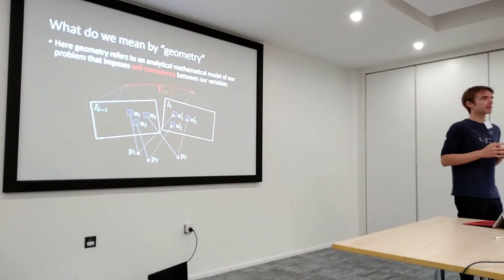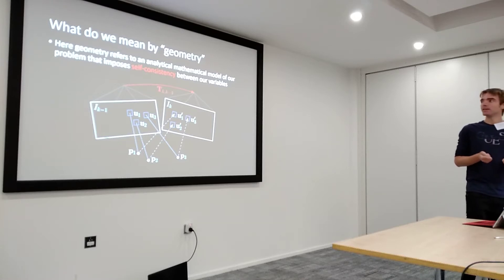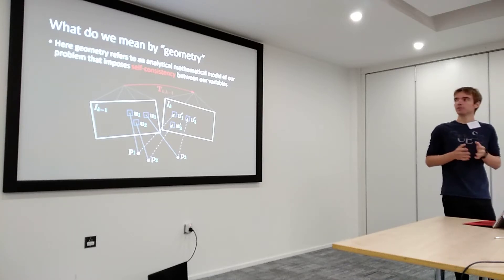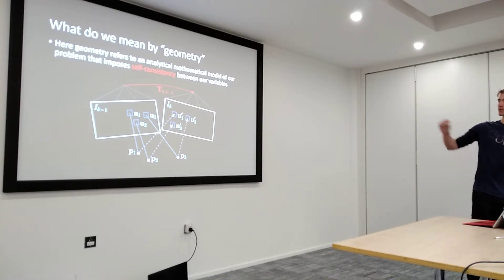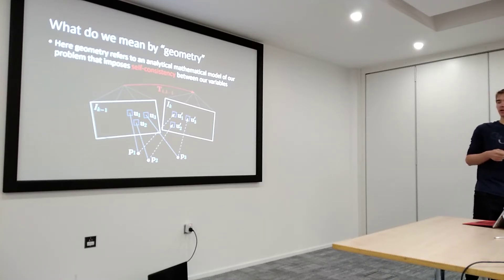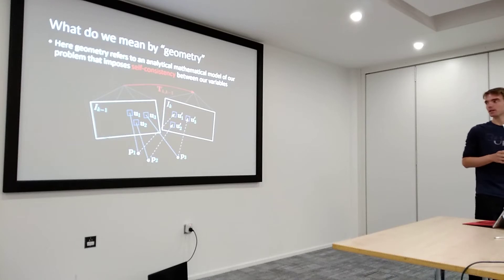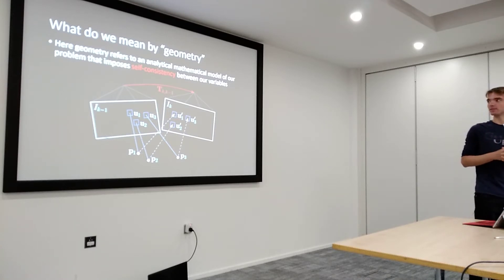So what do we actually mean by geometry? In this talk I'm taking a more general definition — geometry refers to any mathematical expression or model that imposes self-consistency constraints between our variables. In the case of multi-view geometry, for example, we would have two frames taken from a camera at different poses. Given the pose of the cameras and the position of the 3D points in our scene, we can compute the expected location of a point in the second frame. By taking either the photometric or geometric difference between these points, we can compute an error function used as a self-consistency relation.